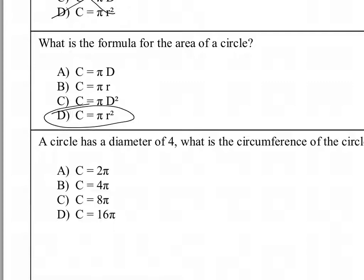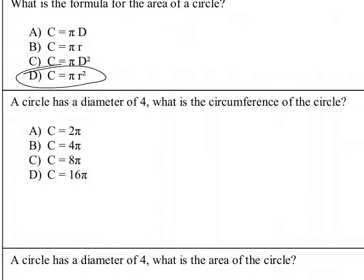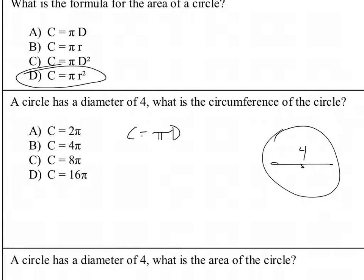It says a circle has a diameter of 4. What is the circumference of the circle? A quick sketch shows a circle with a diameter of 4. Our circumference is equal to π times d, so that means our circumference is π times 4, or 4π. That's answer choice B.